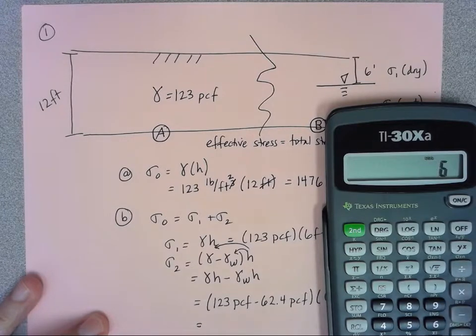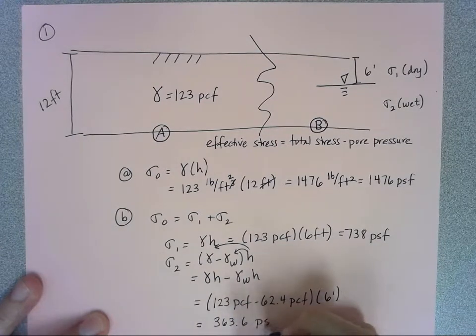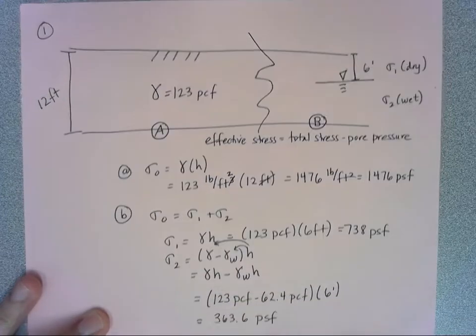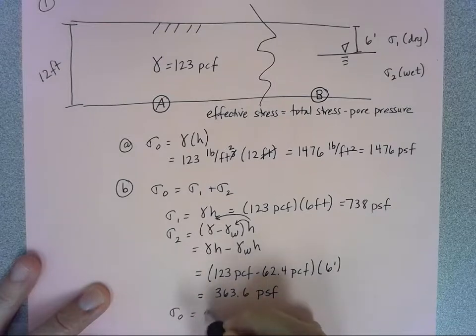And that gives me 363.6, so put that in here, and that's pounds per square foot. And then to find my effective stress at point B I'm just going to add up that sigma one and sigma two.